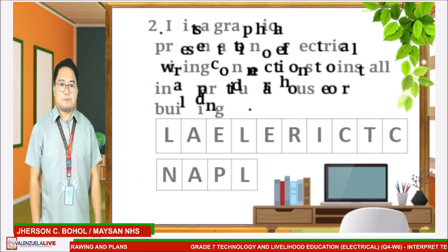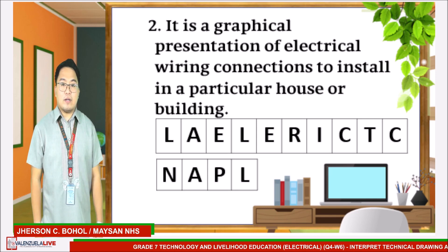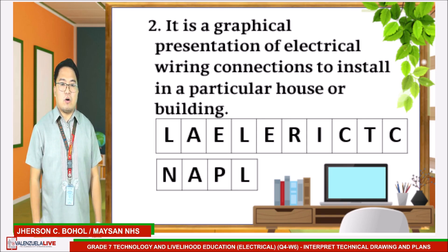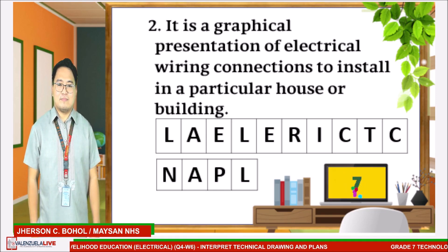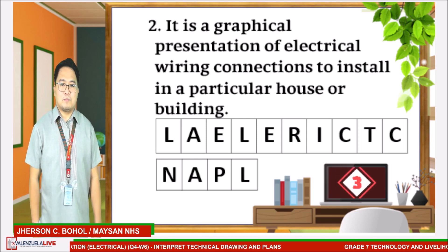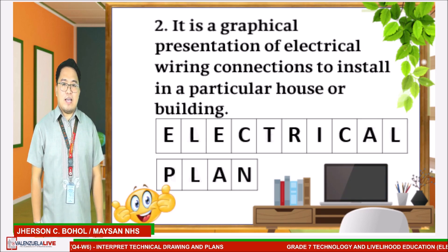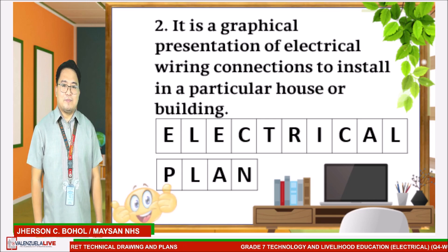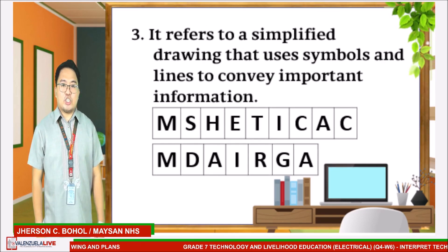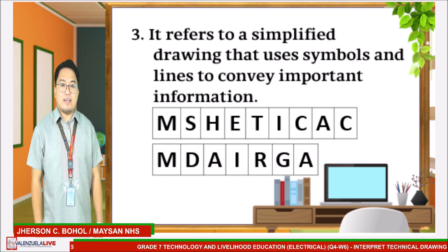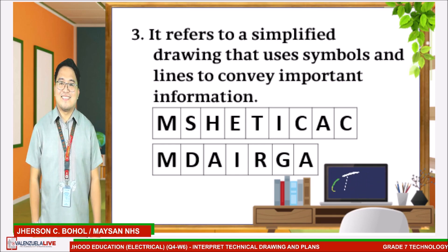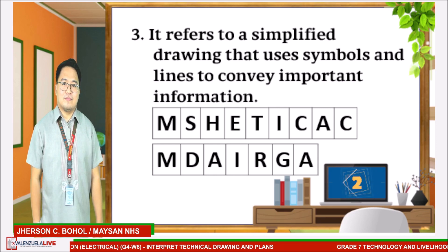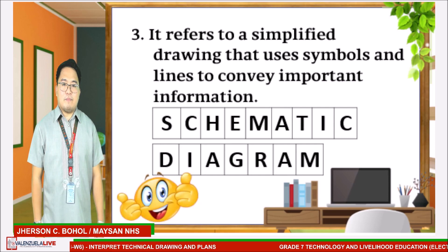Number two: it is a graphical presentation of electrical wiring connection to install in a particular house or building. If you answered 'electrical plan,' you are correct. Number three: it refers to a simplified drawing that uses symbols and lines to convey important information. If you answered 'schematic diagram,' you are correct.